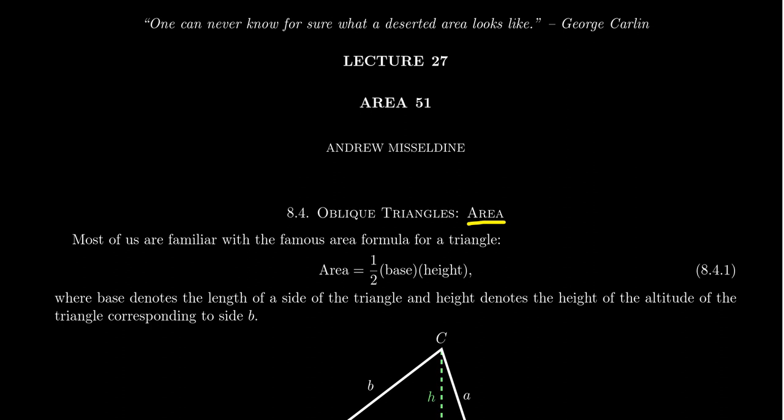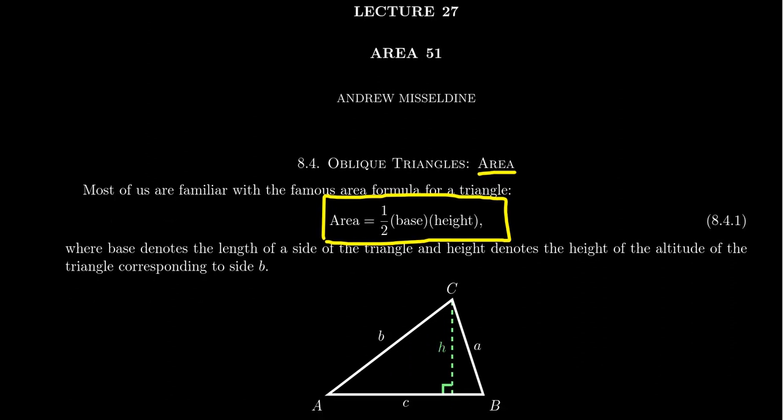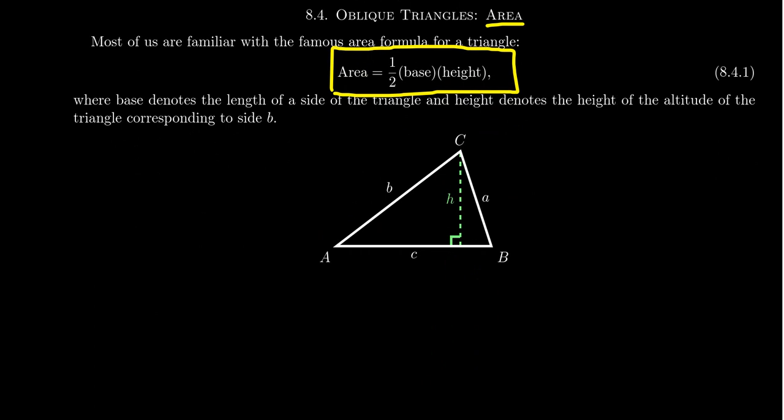In this lecture 27, we're going to talk about finding the area of a triangle. We're used to the very famous formula of a triangle's area, that is, area is equal to one half base times height. But where does that formula come from? And how does one actually use that in a practical sense?